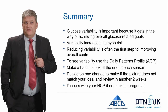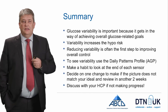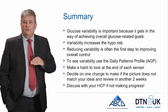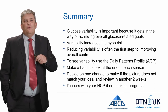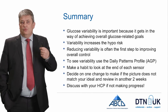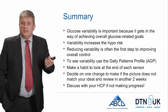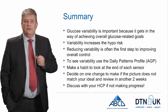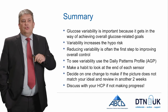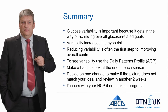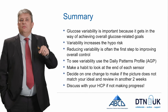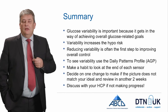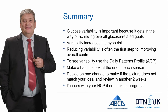In summary, glucose variability — the difference between one day and the next — is important because it gets in the way of achieving overall glucose-related goals. Those who have high variability will have a higher hypoglycemia risk, and therefore reducing variability is most often the first step towards improving overall control. The way to see variability from a sensor is to use the daily patterns profile, or ambulatory glucose profile. It's a good habit to look at this at the end of each period of sensor wear, and to identify the one change you might wish to make before the next review. And if things aren't progressing, that's hopefully where your healthcare professional can come in and help. Thanks very much for your attention.